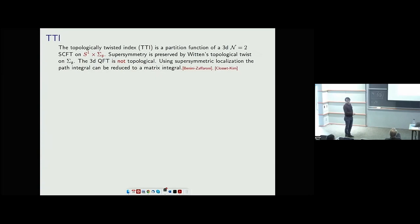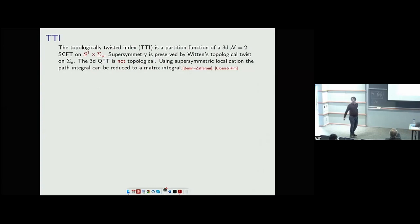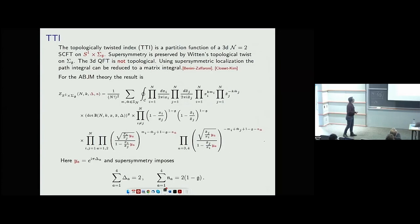At low energy you'll get some kind of effective 1D theory — not a topological theory — so you keep some non-trivial correlation functions, but they should be very simple. People asked and answered what the path integral on this space is for general matter-coupled N=2 Lagrangian theories, and they gave you quite involved integrals to solve. Here's one for ABJM theory: the answer for this path integral in the presence of supersymmetric sources looks like this.